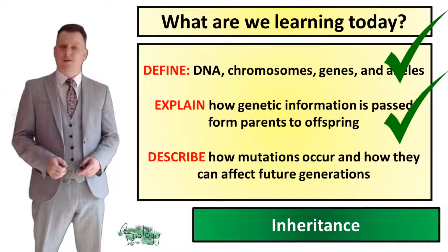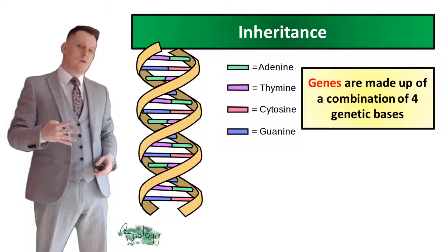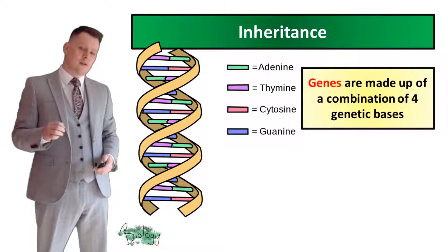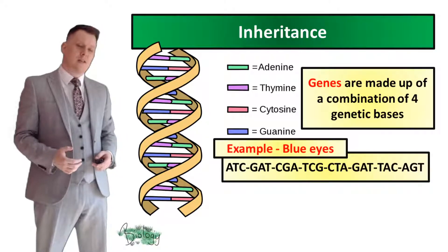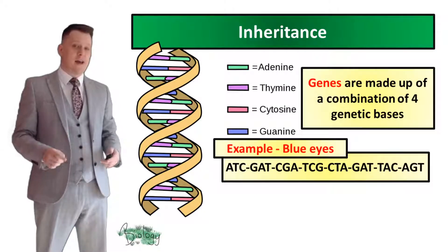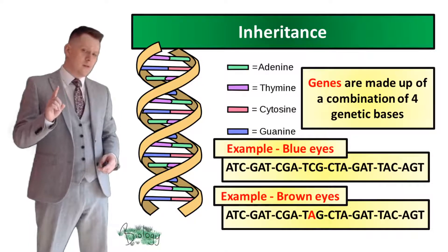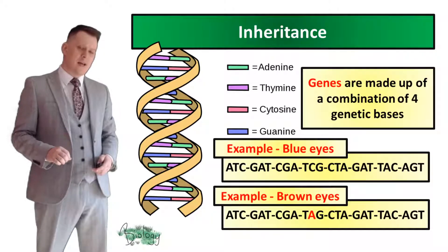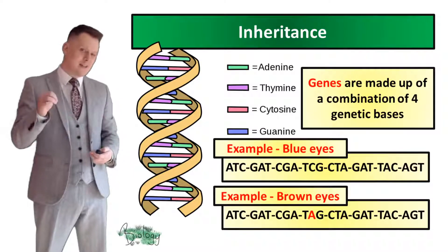Next we're going to describe how mutations occur and how they can affect future generations. Our genes are made up of a combination of four genetic bases: adenine, thymine, cytosine and guanine — shortened to A, T, C and G. Looking at the blue eyes allele, you can see it's made up of a combination of these four bases. Comparing it to the brown eyes allele, there is only one genetic base that differs — a cytosine has changed to an adenine. All it takes is one change in one genetic base for a person to exhibit a different characteristic.